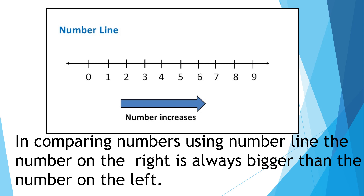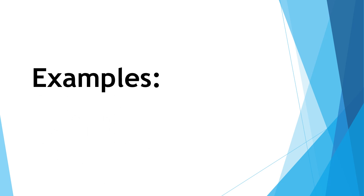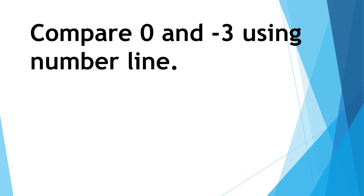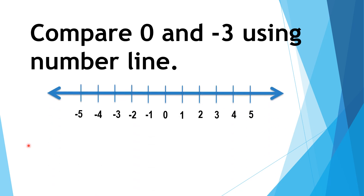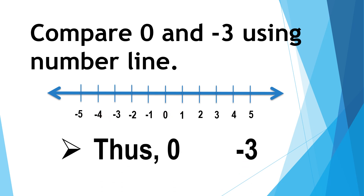In comparing numbers using the number line, the number on the right is always bigger than the number on the left. Example: Compare zero and negative three using the number line. Remember, the number on the right is always bigger than the number on the left. Zero is on the right and negative three is on the left. Thus, zero is greater than negative three.